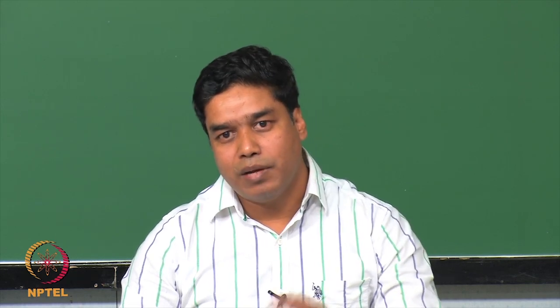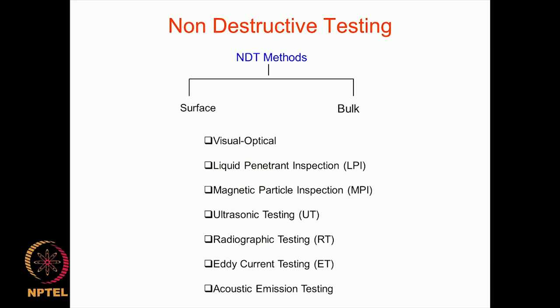That is why visual optical is included in this list, although it is not really in the strict sense an NDT method. As I said, that is the first thing people will do — to see if any flaws are visible externally. We will start with the visual optical method first, and then we will go on to the other NDT methods one by one and cover them in more detail. I will project the first slide right now to start with the visual optical method.